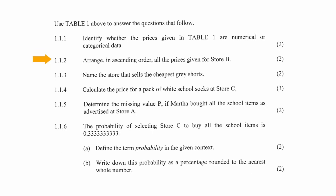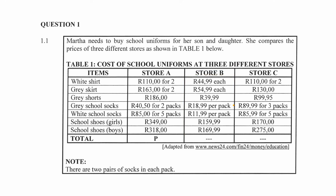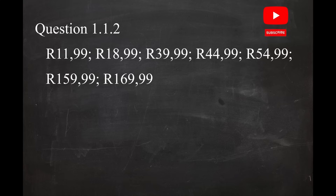In question 1.1.2, you are instructed to arrange all the prices given for Store B in ascending order. Ascending order means that you have to arrange the data from the lowest value to the highest value. The arrangement will look like this.